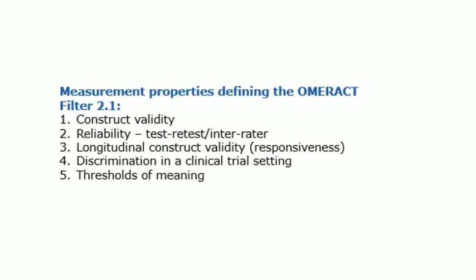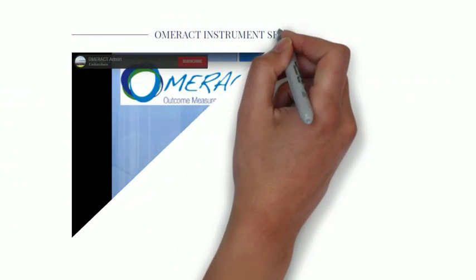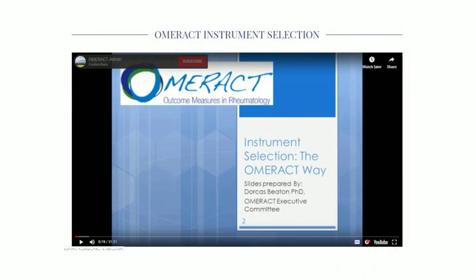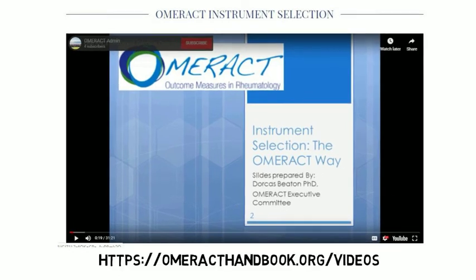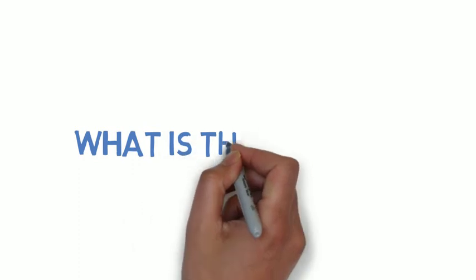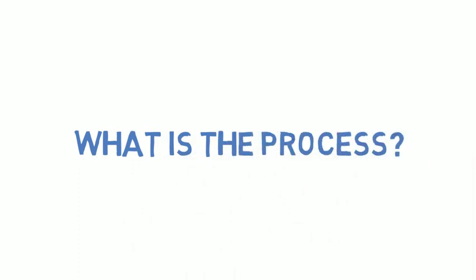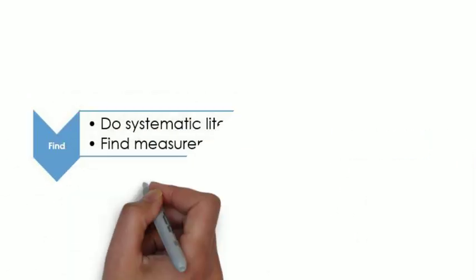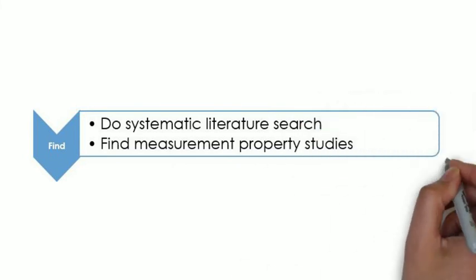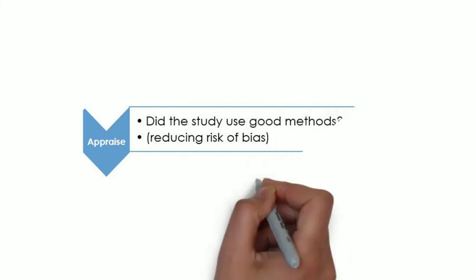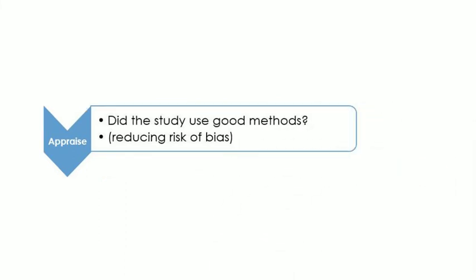We won't go into detail in these measurement properties in this video, but we do have a 30-minute YouTube video that provides greater detail on assessing these properties. So what is the overall process the working group follows to get the evidence to assess these five measurement properties? First, they conduct a systematic literature search to find the measurement property studies. Then they check the methods used in each study and see if they were appropriate.